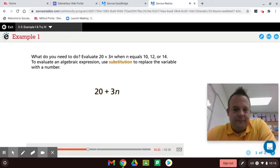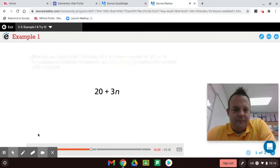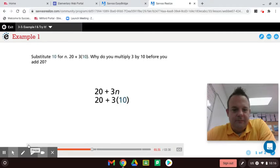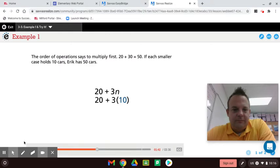To evaluate an algebraic expression, use substitution to replace the variable with a number. Substitute 10 for n. 20 plus 3 times 10. Why do you multiply 3 by 10 before you add 20? The order of operations says to multiply first. 20 plus 30 equals 50. If each smaller case holds 10 cars, Eric has 50 cars.